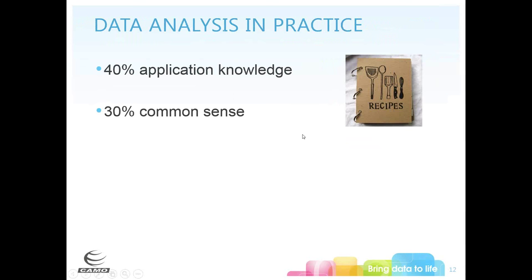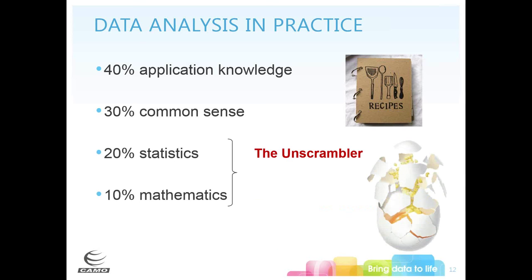In data analysis practice, we like to say it's really 70% based on your application knowledge — you are the subject matter expert — and your common sense. It's really important that you understand what you're looking at and what you're trying to answer. The remaining 30% is your statistics and mathematics, and that's the part the Unscrambler takes care of for you. But you do need to apply your application knowledge and common sense when interpreting the output.